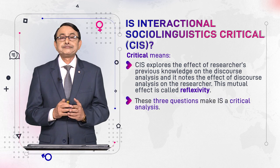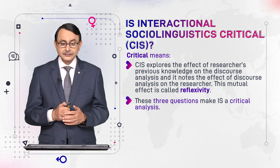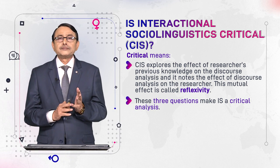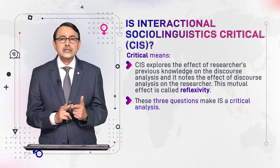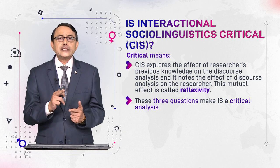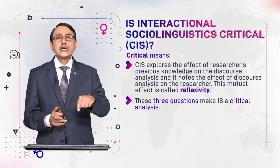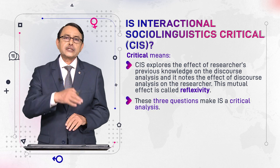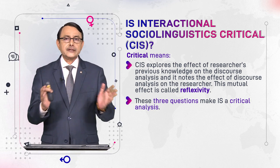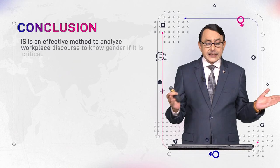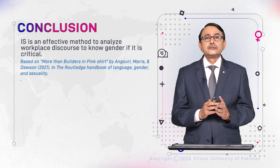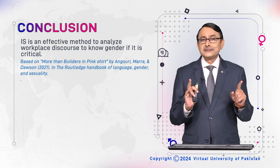These three elements make IS into Critical IS: first, the researcher's role as outsider; second, the researcher's role as insider; and third, reflexivity — the researcher's influence on discourse analysis and the influence of discourse analysis on the researcher. When these three things are present, Interactional Sociolinguistics becomes Critical Interactional Sociolinguistics. IS is an effective method to analyze workplace discourse and understand gender, when it is critical.